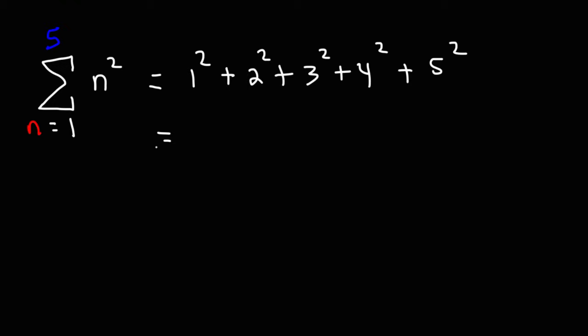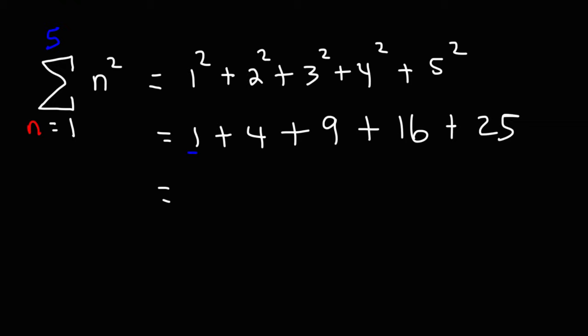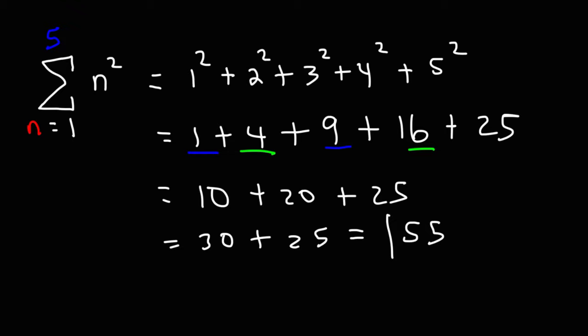1 squared is 1, 2 squared is 4, 3 squared is 9, 4 squared is 16, 5 squared is 25. And now we've just got to add the numbers. 1 plus 9 is 10. If we combine 4 and 16, that's 20. And 10 plus 20 is 30. 30 plus 25 is 55. So that's the value of this expression.